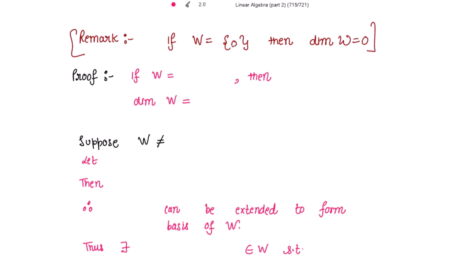Note the remark: if W equals the singleton set containing only the zero element, then the dimension of W is equal to zero. The zero vector itself does not have a dimension; the vector space consisting of only the zero vector has dimension zero. This is because a basis for that vector space is the empty set, and the dimension of a vector space is the cardinality of any basis for it.